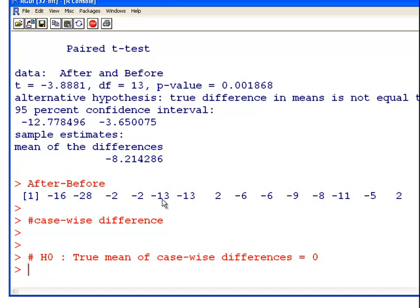The alternative, H1 or HA, true mean of case-wise differences is not zero.